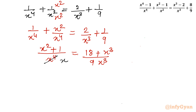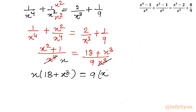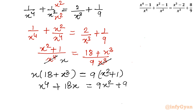After cancelling x³, we cross-multiply the remaining terms: x times (18 + x³) equals 9 times (x² + 1). Expanding gives x⁴ + 18x = 9x² + 9. Taking 18x to the right: x⁴ = 9x² minus 18x + 9.